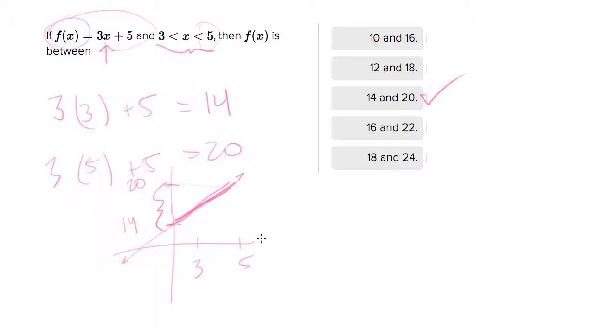But what if this function weren't a line? This isn't happening here, but for the future, in case this comes up, suppose you had a function that didn't look like that line. What if it looked like this? And it went like that, for example.